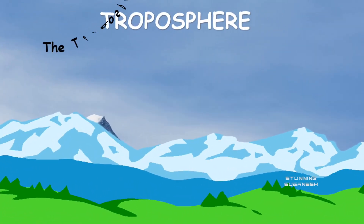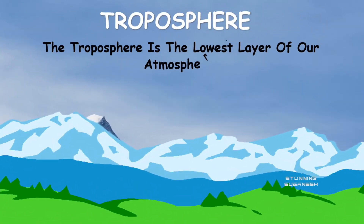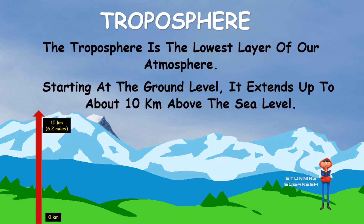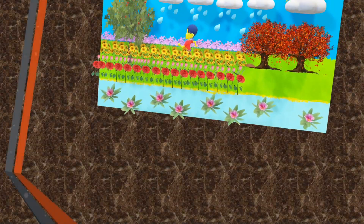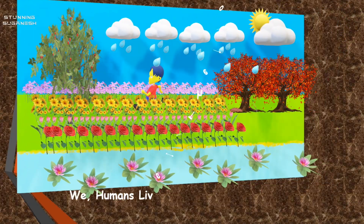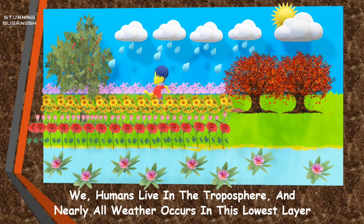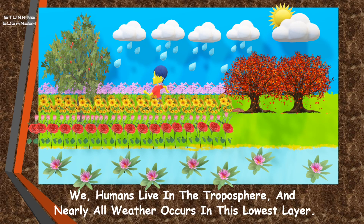The troposphere is the lowest layer of our atmosphere. Starting at ground level, it extends up to about 10 kilometers above sea level. Humans live in the troposphere, and nearly all weather occurs in this lowest layer.